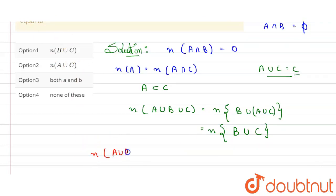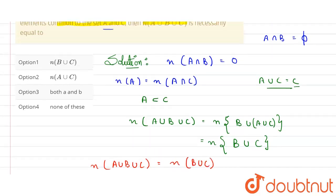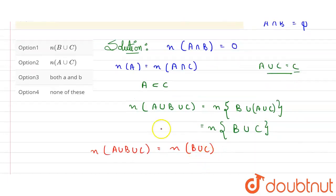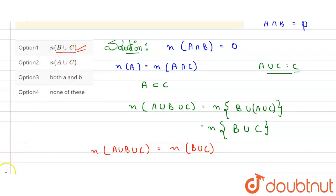So here, let me write this properly again. Number of elements in A union B union C will be equal to number of elements in B union C. This is what we concluded. You can see option one is matching with the answer: n(B ∪ C). So this is the correct answer among all the four options. Thank you.